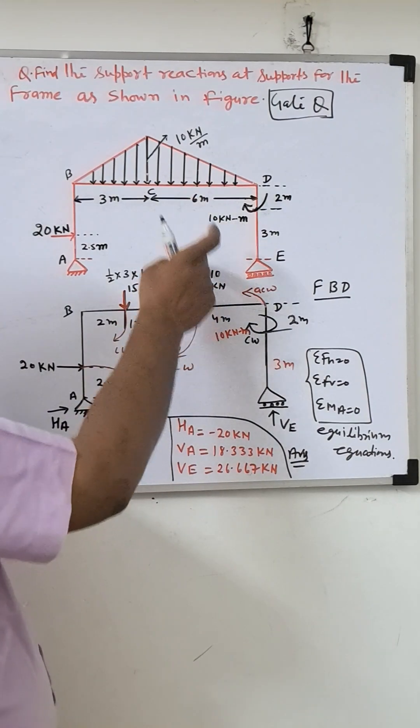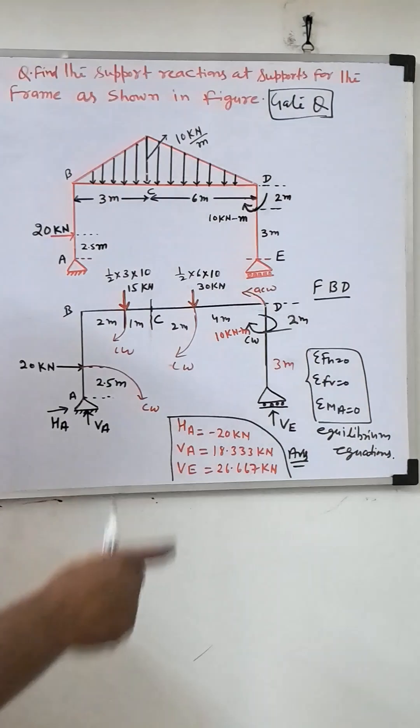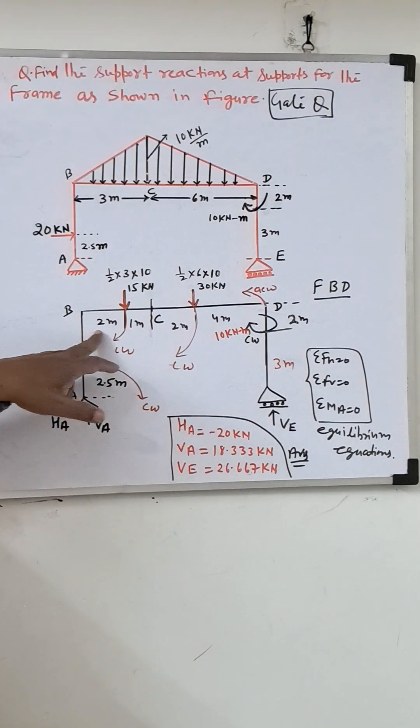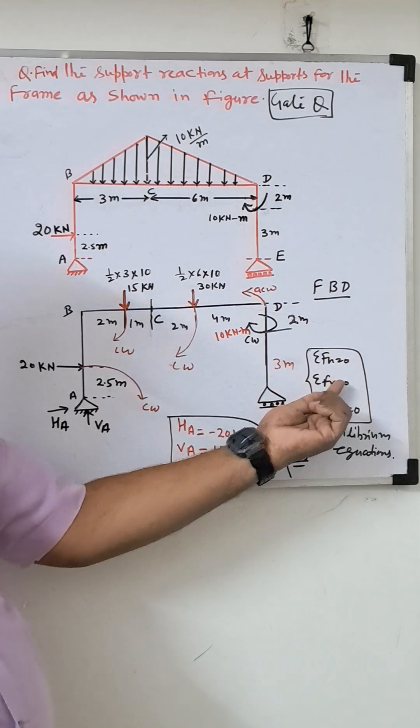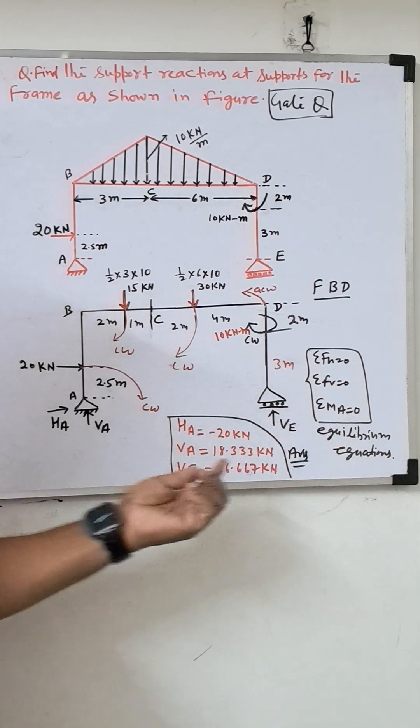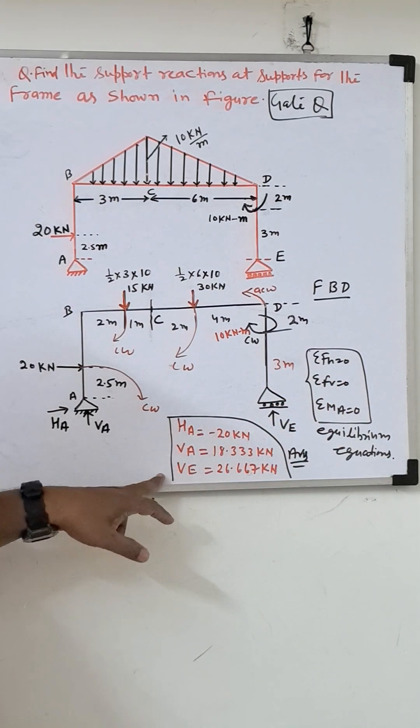So the UDL load we draw here from B, 2 meters from D, 4 meters. Then we apply the equilibrium equations: Sigma FX = 0, Sigma FY = 0, Sigma M = 0, and we get HA, VA, and VE.